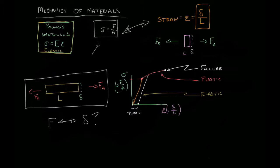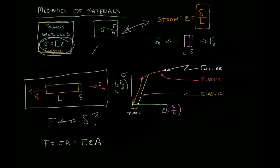We're going to start at the beginning with a definition of stress. We know that force is going to be the stress times whatever the area is. We know that there's also a relationship between stress and strain. So in green, we're going to add our green components: stress is E epsilon, and we'll keep that A. So now we have a relationship between the force applied and the strain.